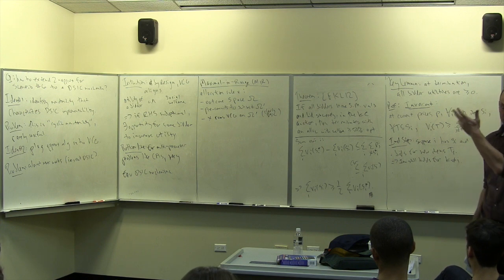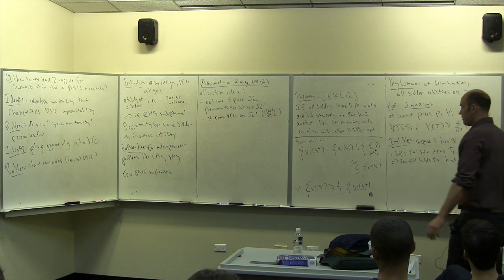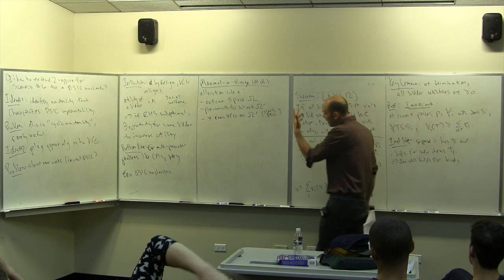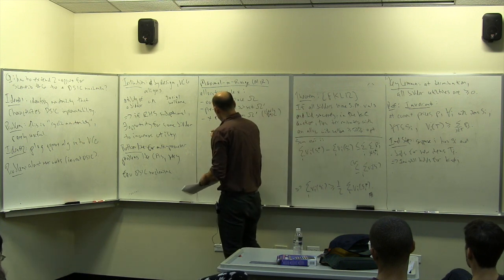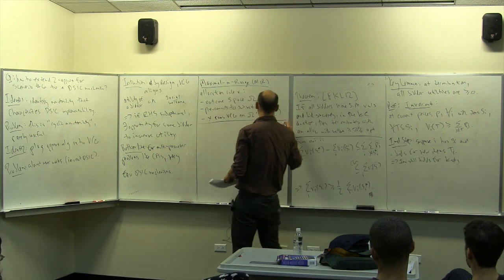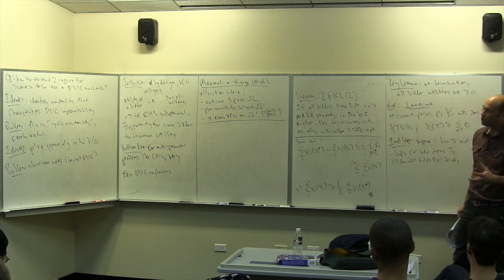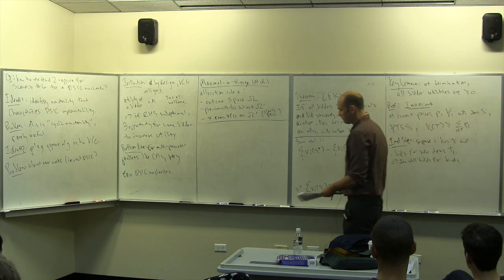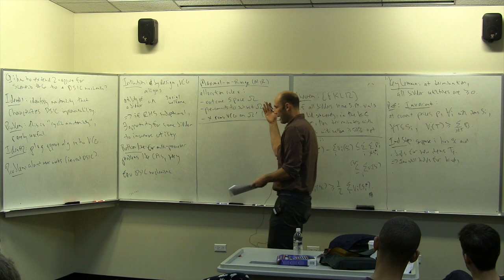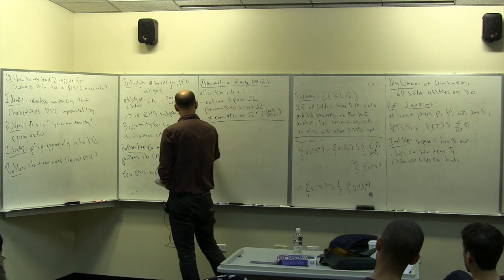You hope to find a sweet spot: an omega-prime that's rich enough that you can still get a good approximation — you've thrown out some outcomes but hopefully something near-optimal remains — but also small or structured enough to optimize efficiently. This is clearly DSIC just because VCG is DSIC. Omega-prime could well have been the original outcome space for all anybody knew. So could MIR ever be useful for anything? It's not useful that often, but once in a while. Let me show you an example.